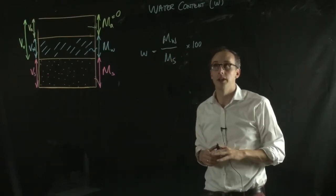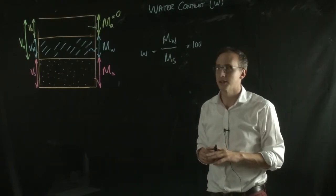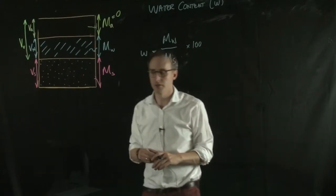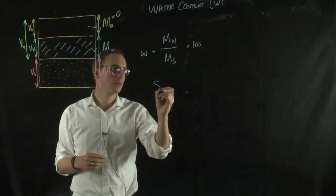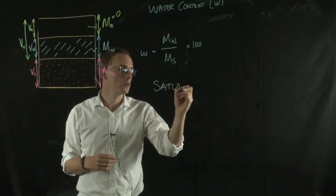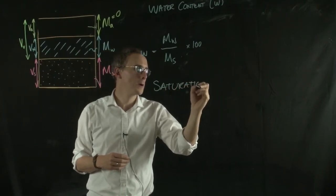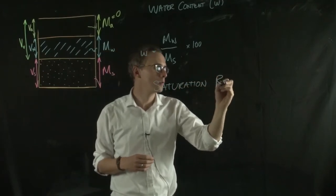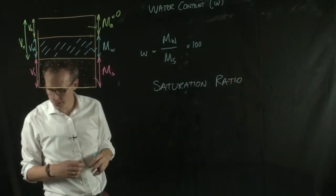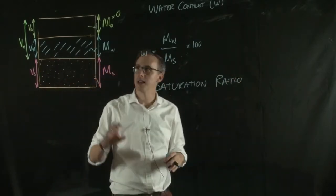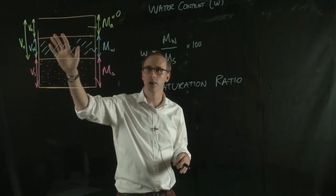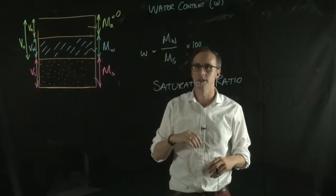Another parameter to describe the liquid in a soil is something called the saturation ratio. Now what the saturation ratio describes is how much of the volume of the voids, so vv in this case.